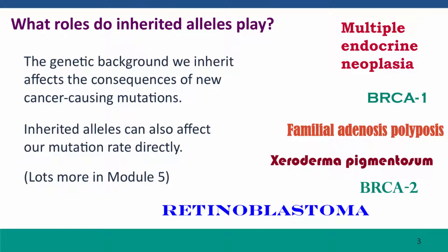It's well established for a number of cancers that inherited alleles play a substantial role in risk. In general, though, these are not very common cancers. We discussed in the previous lecture how inherited alleles can affect the consequences of new mutations. So if we inherit a loss of function mutation in a gene whose job is to control cell growth, we'll be phenotypically normal because such a mutation is usually recessive. But we're at higher risk than other people because all it takes is one more mutation in the other allele of that gene, and we have a cancer cell.